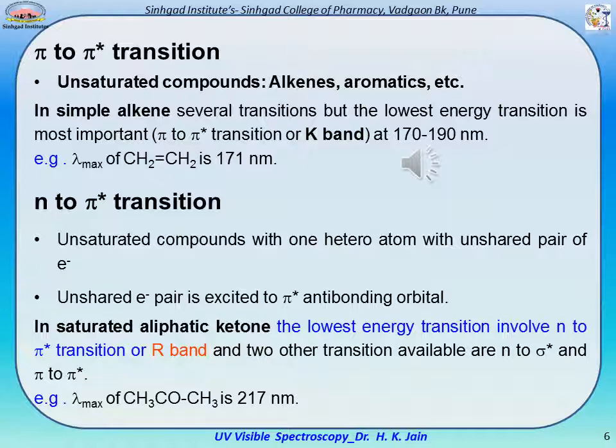The n→pi* transition belongs to unsaturated compounds with one heteroatom and an unshared electron pair. In this transition, the unshared electron pair is excited to the pi* anti-bonding orbital. In saturated aliphatic ketones, the lowest energy transition involves n→pi* (R band). For example, the λmax of acetone is 217 nm.